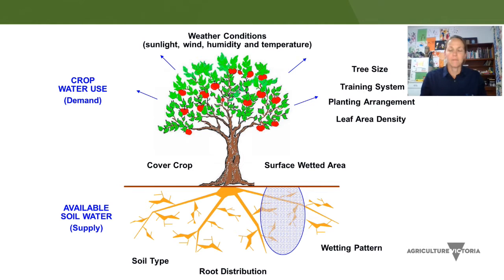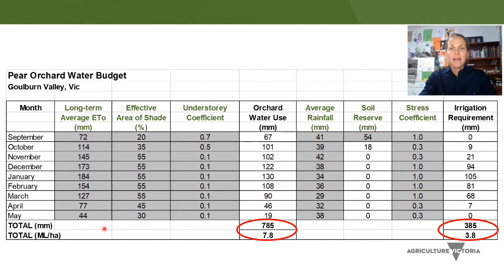The irrigation budgeting tool takes typical values for a pear orchard in the Goulburn Valley, along with some orchard-specific information that you can enter, and provides a prediction of orchard water use over a season. The irrigation budget is a monthly budget and the two main outputs are orchard water use and irrigation requirement, calculated in millimetres and megalitres per hectare. The irrigation requirement is less than the orchard water use because of rainfall during the season and also soil reserves from winter rainfall. The grey columns are where you enter or alter data, and the white columns automatically calculate from that information.